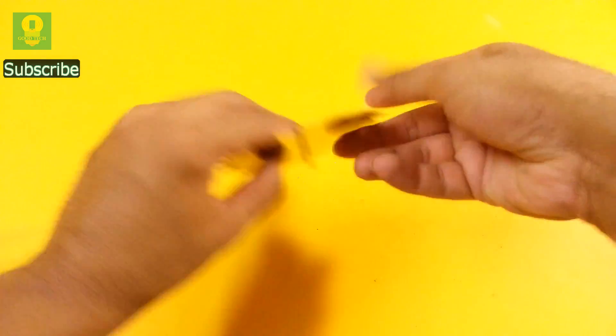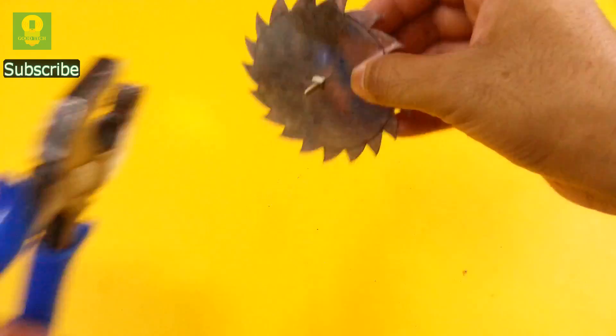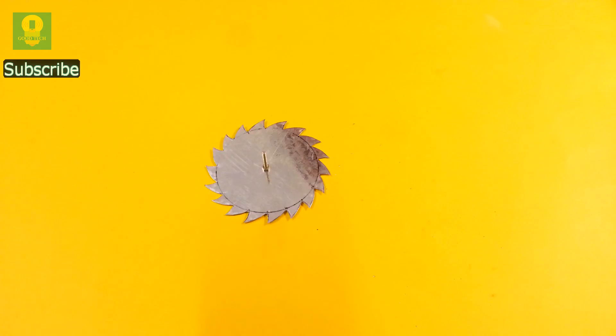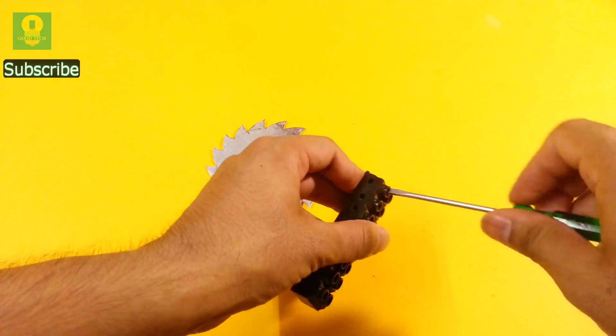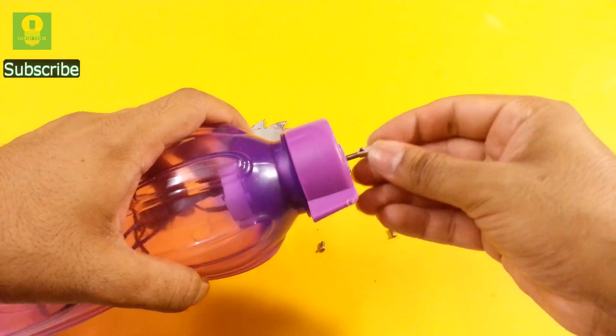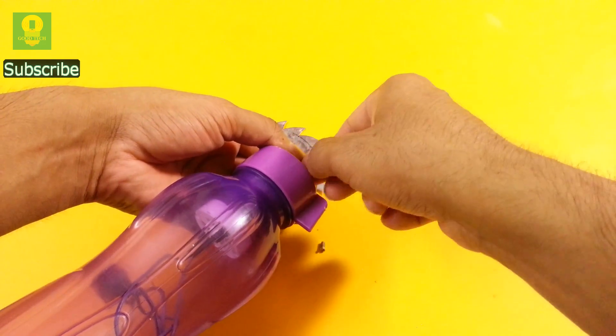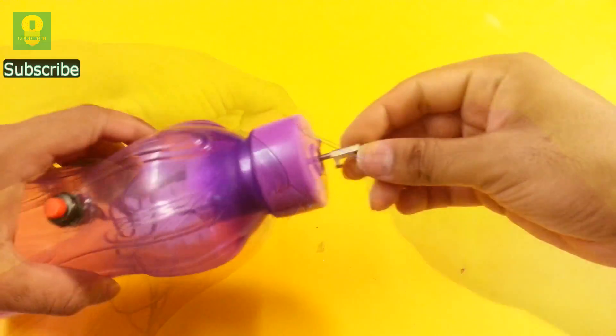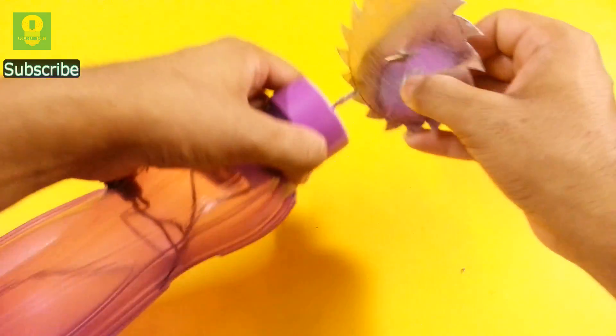Insert a small bolt and tight it on the blade using a nut. Take the electrical cable connectors and remove the metal contacts. Attach one side of the metal contact to the motor. Attach the blade to the motor using the other side of the metal contact.